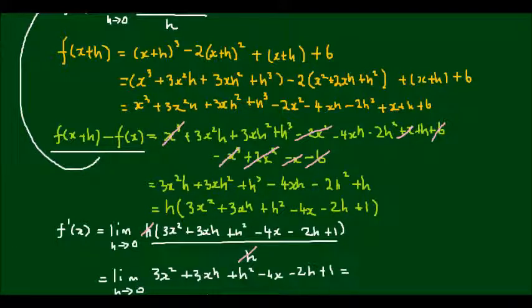And this is equal to, well, the limit as h approaches 0 of all of the terms that have an h will go to 0, because anything times 0 is going to equal 0, so these terms will be eliminated. And I'll be left with the limit as h approaches 0 of 3x squared minus 4x plus 1.